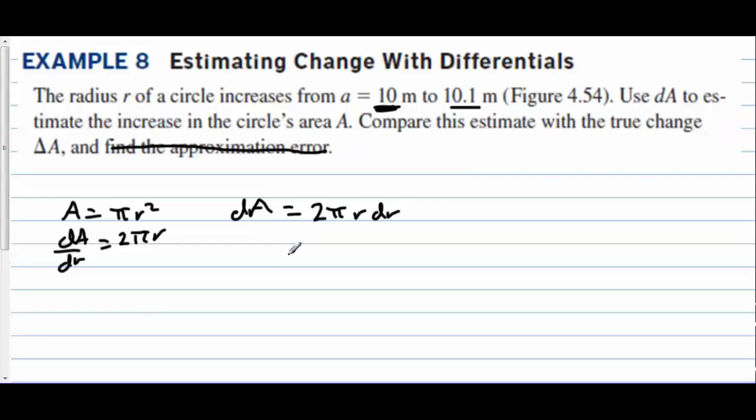And if we take 10.1 minus 10 we get 0.1. So the change in the radius is 0.1. We'll multiply this by 0.1. So we have 20π times 0.1 which is 2π. So when the radius changes by 0.1, the area is changing by 2π.